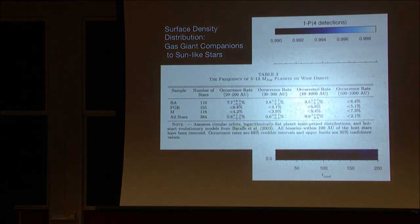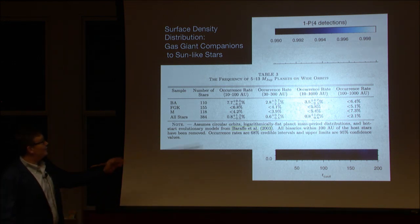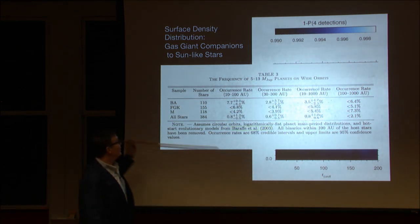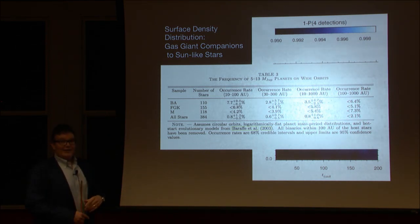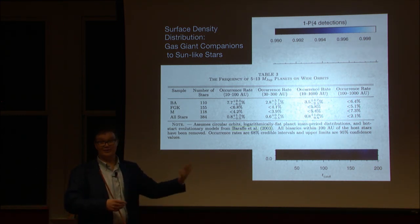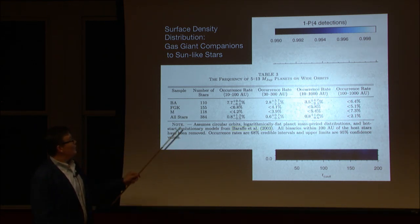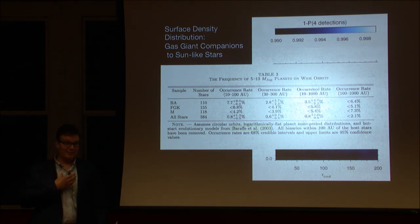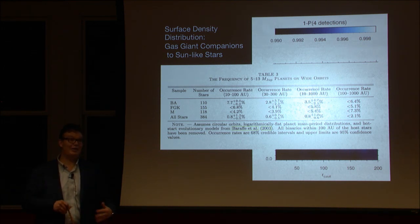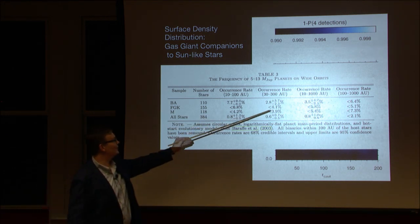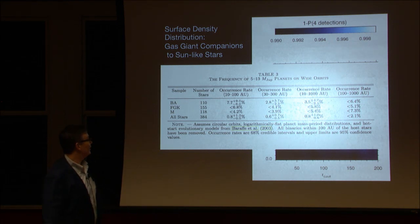Brendan Bowler put together a nice summary of the state of the field last year. This shows the frequency of 5 to 13 Jupiter mass planets on wide orbits for different stellar samples. The bottom line is there aren't very many planets out beyond 30 AU, which might not be surprising to those who study planet formation — there's just not that much material out there, and it's hard to do core accretion there. We do find a hint that the frequency of gas giants might depend on stellar mass, with higher mass stars tending to have bigger planets, perhaps also farther out.